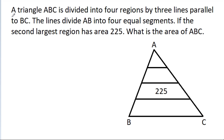In this video, we have given that a triangle ABC is divided into 4 regions by three lines parallel to BC. The lines divide AB into 4 equal segments. If the second largest region has area 225, then what is the area of ABC?